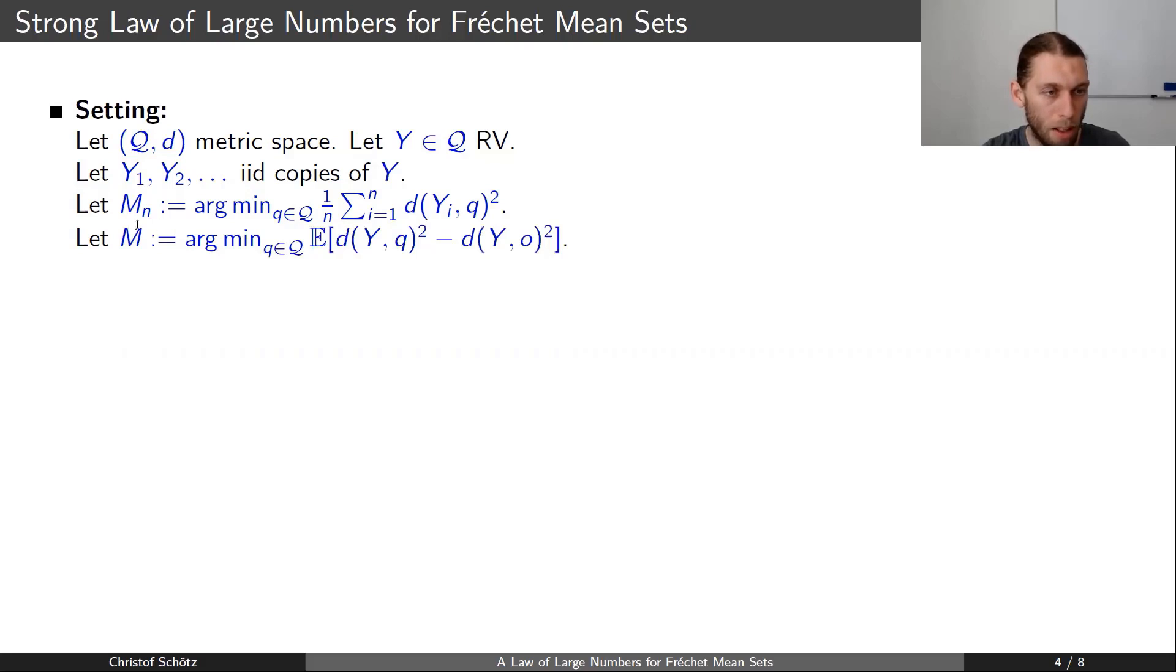The population Fréchet mean M is the minimizers of the expected squared distance to the random variable, but here we subtract another value which does not depend on q, so it should not really change the minimizers.